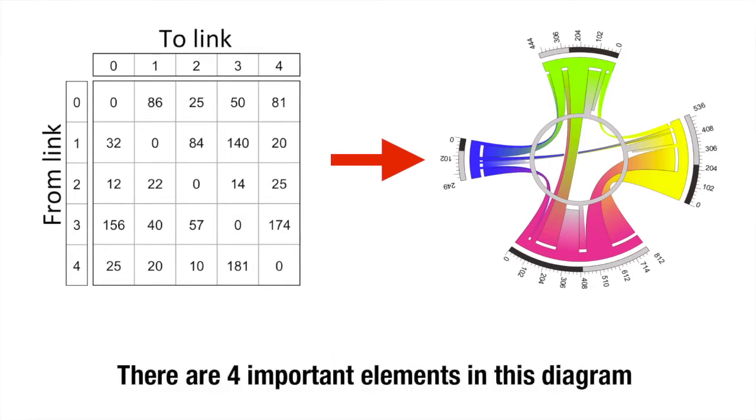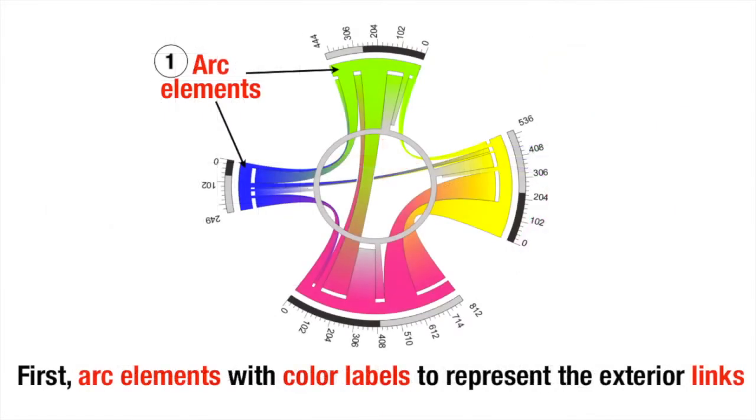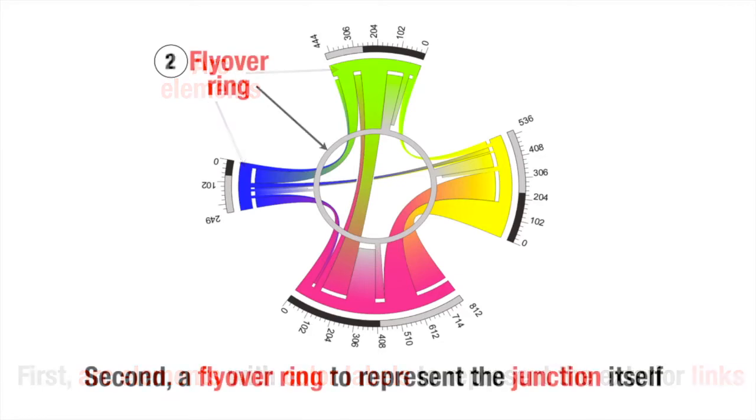There are four important elements in this diagram. First, arc elements with color labels to represent the exterior links. Second, a flyover ring to represent the junction itself.